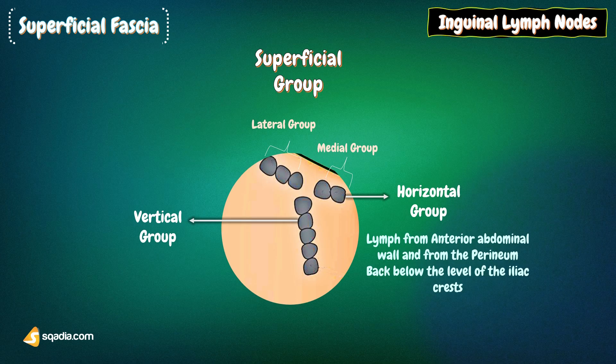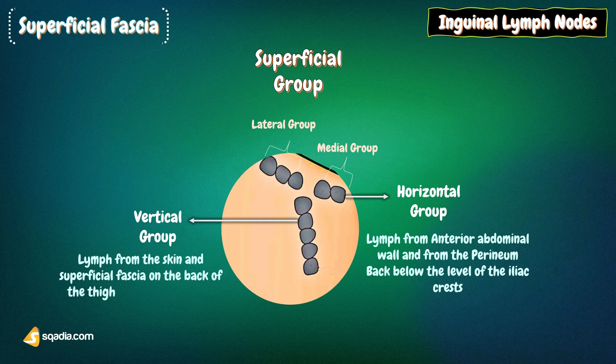The lateral members of the horizontal group receive superficial lymph vessels from the back below the level of the iliac crests. The vertical group lies along the terminal part of the great saphenous vein and receives most of the superficial lymph vessels of the lower limb. Lymph from the skin and superficial fascia on the back of the thigh drains upward and forward into the vertical group.